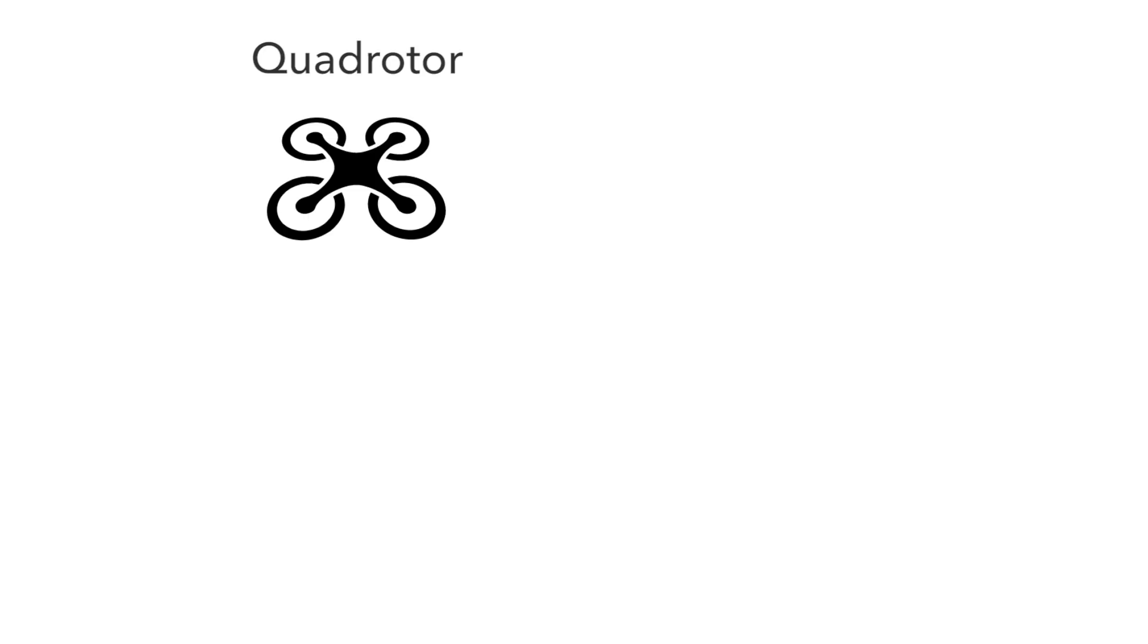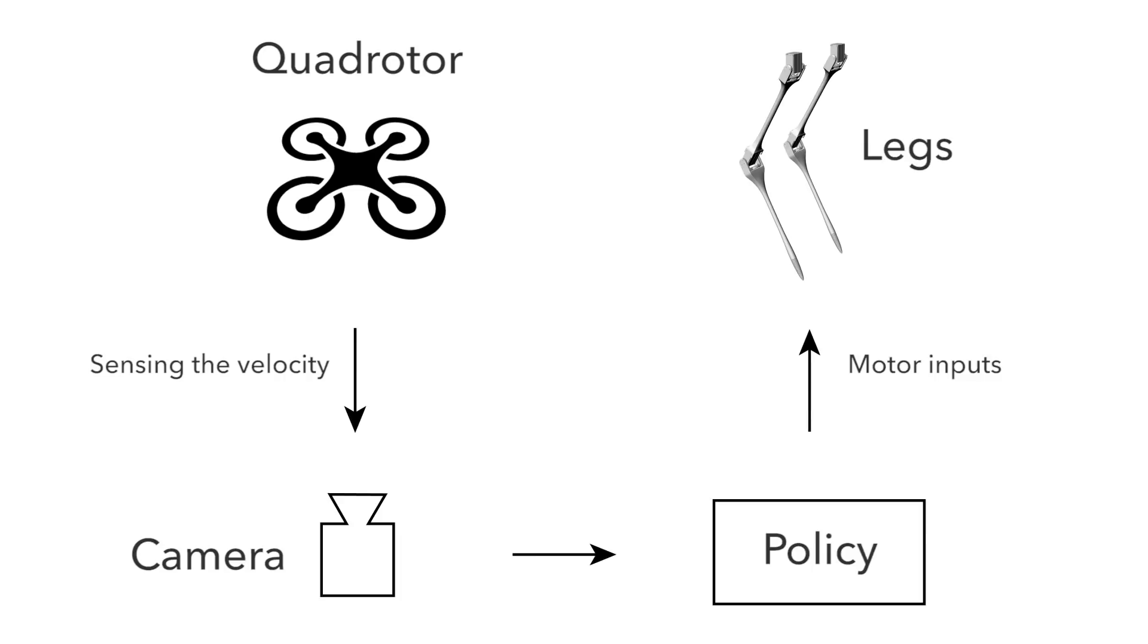The velocity of the quadrotor is estimated by the motion capture data, and the input of the servo motors of each joint is generated using the optimized control policy.